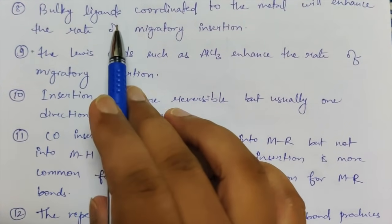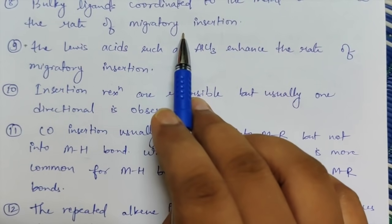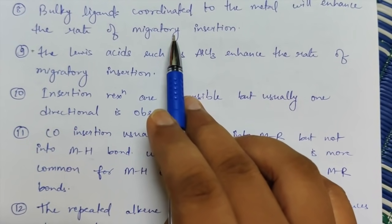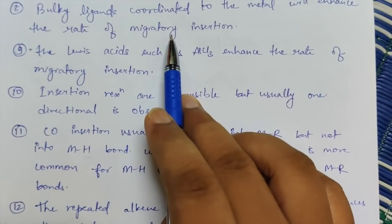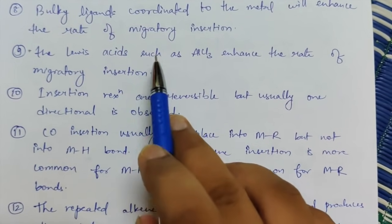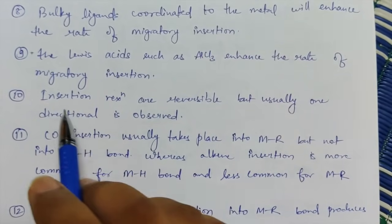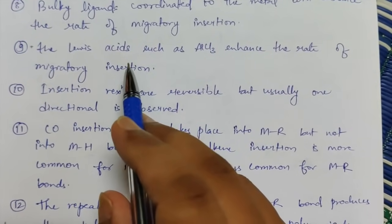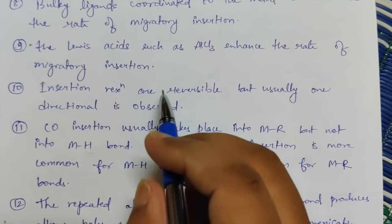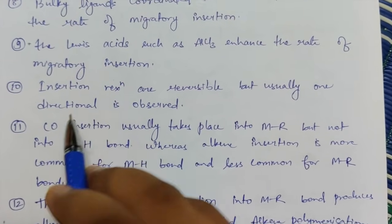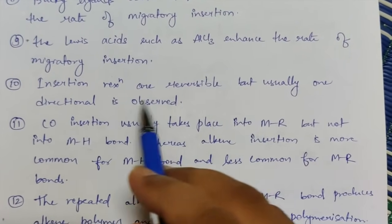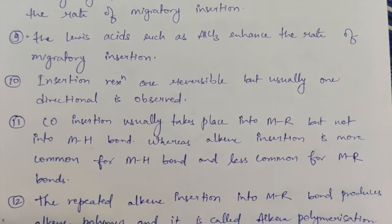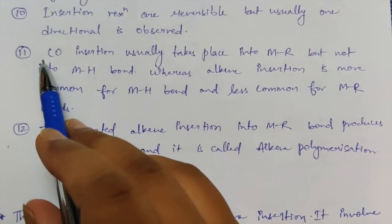The next point says that bulky ligands coordinated to the metal will enhance the rate of migratory insertion — the presence of bulkier ligands apart from the migrating groups and CO will enhance the rate. The next point says that Lewis acids such as AlCl3 enhance the rate of migratory insertion. Migratory insertions are reversible but usually observed as one-directional.